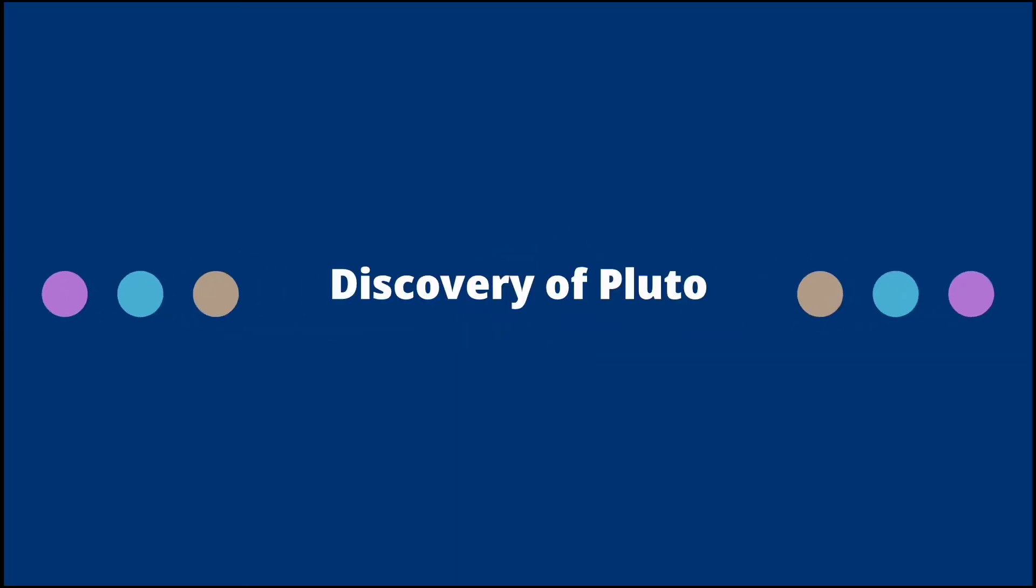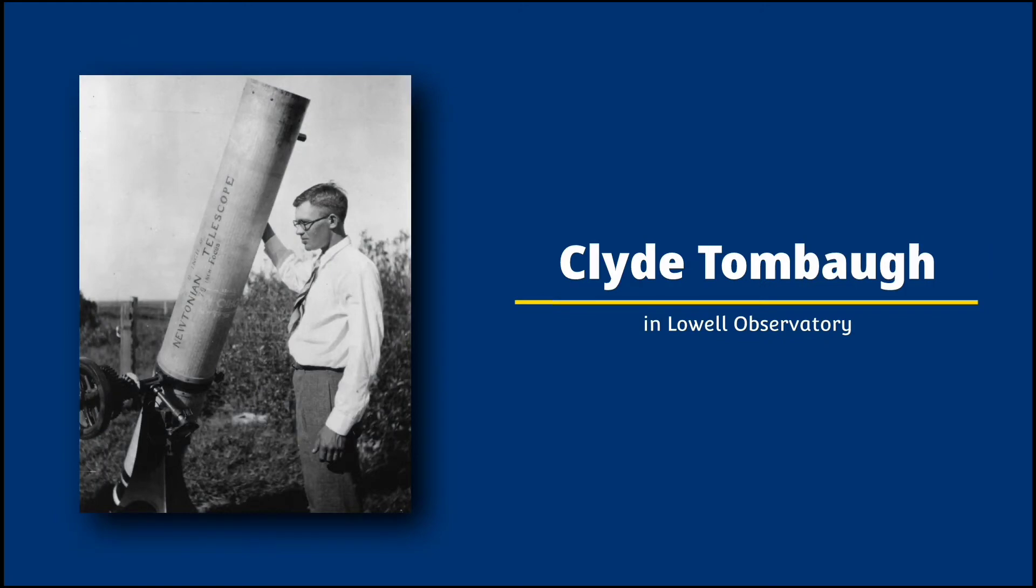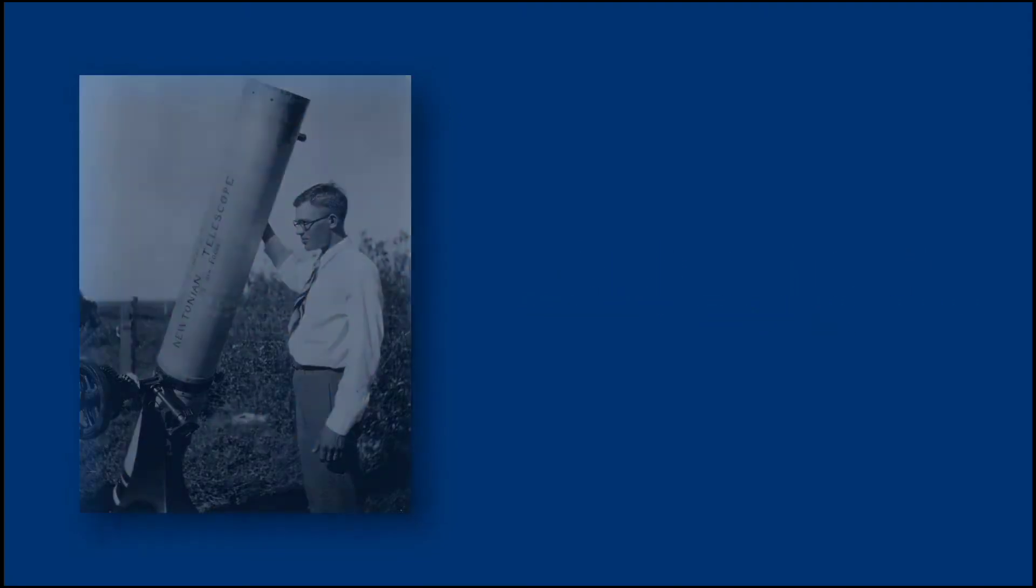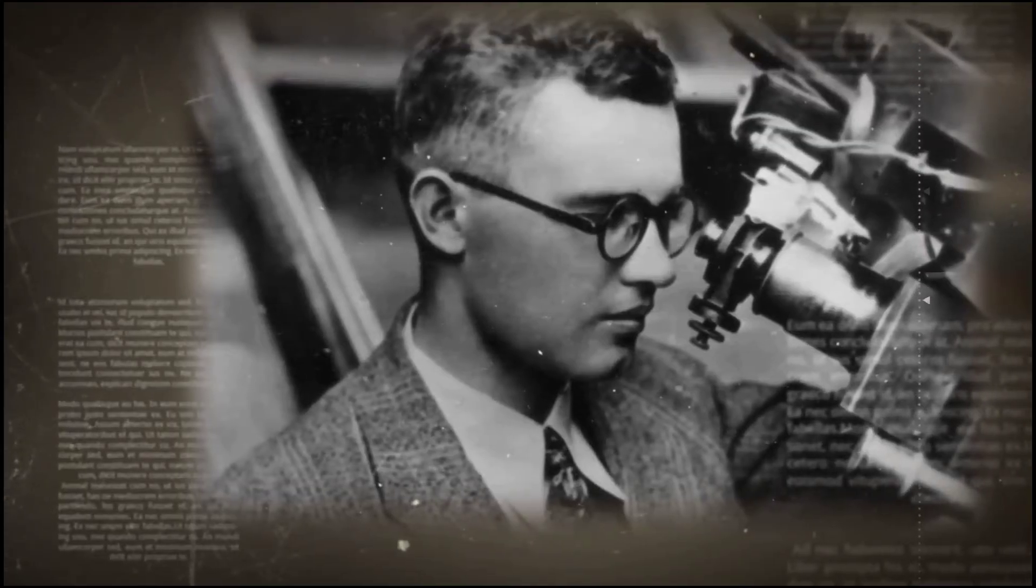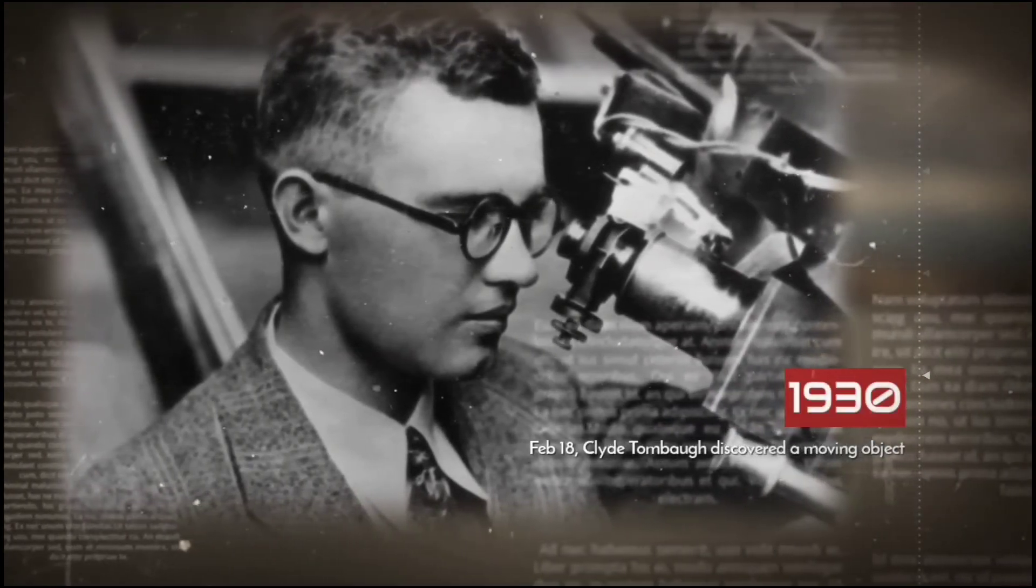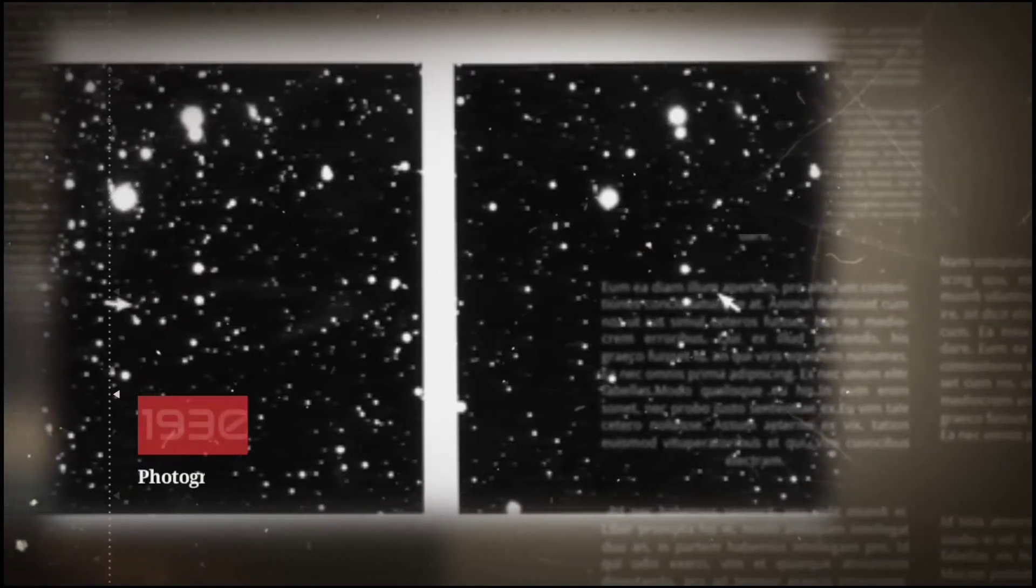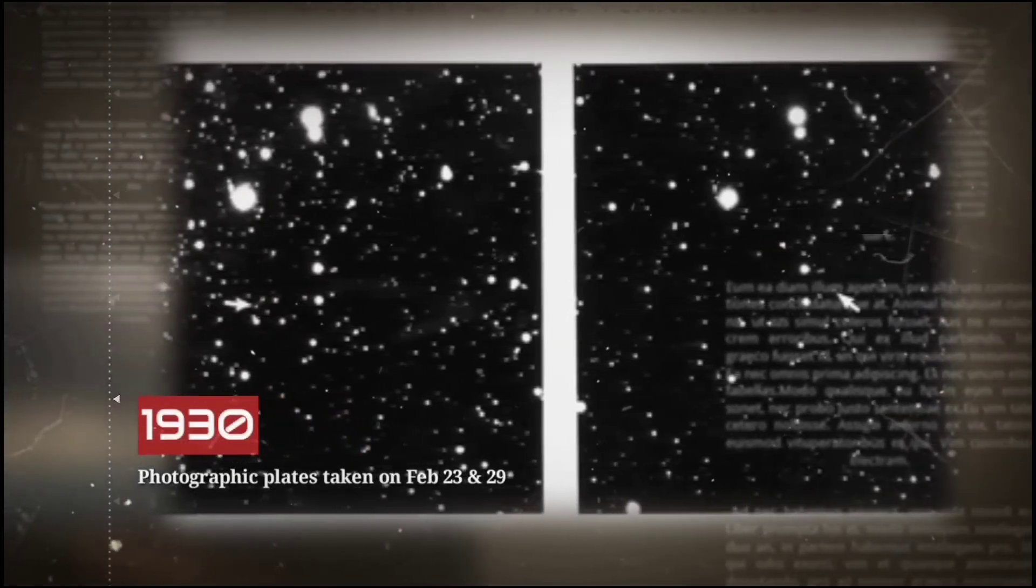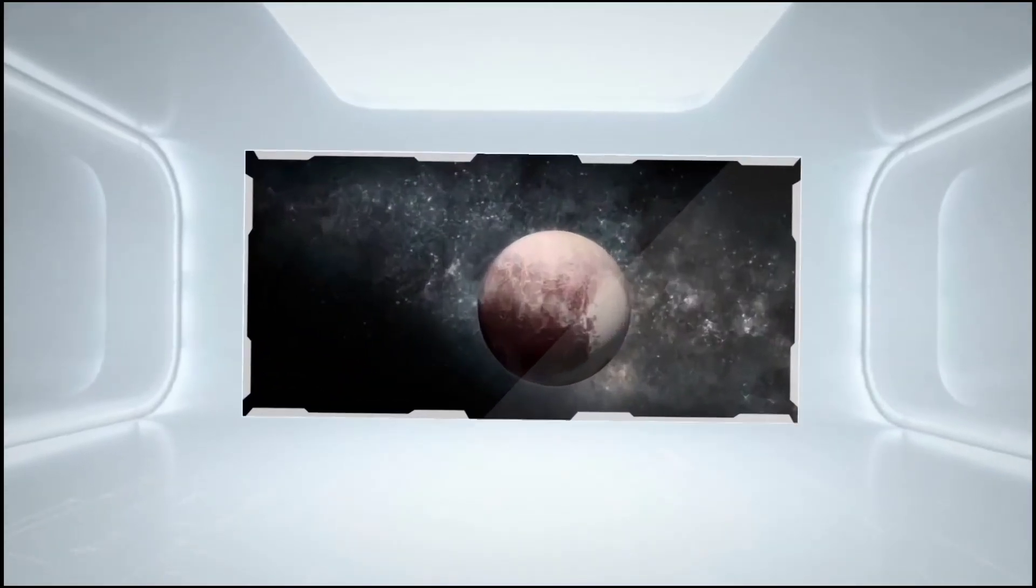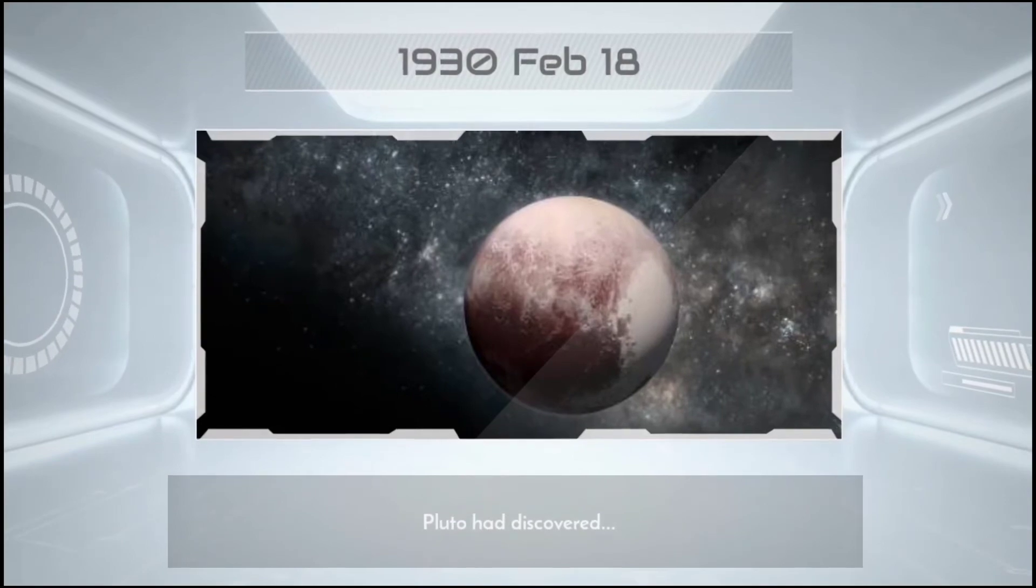Now, let's see its discovery. Pluto was discovered by 23-year-old Clyde Tombaugh at Lowell Observatory. Tombaugh's task was to systematically image the night sky in pairs of photographs, then examine each pair and determine whether any objects had shifted position. On February 18, 1930, after nearly a year of searching, Tombaugh discovered a possibly moving object on photographic plates taken on January 23 and January 29. A lesser-quality photograph taken on January 21 helped confirm the movement, and a new planet had been discovered.